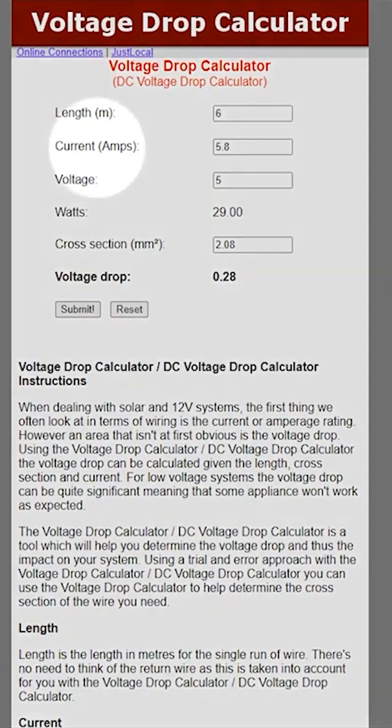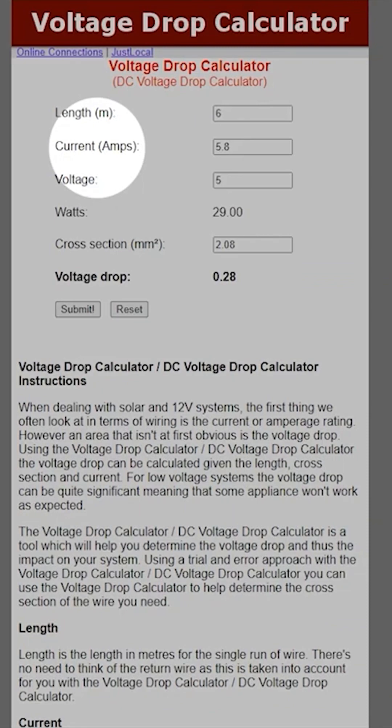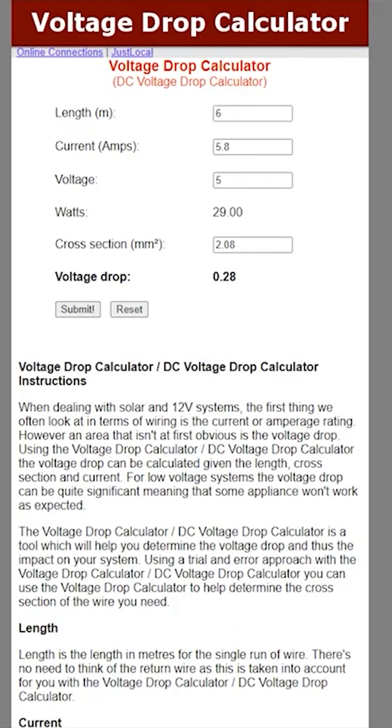Current. Reducing the current will help limit voltage drop, but doing this means running our tape at a reduced brightness.